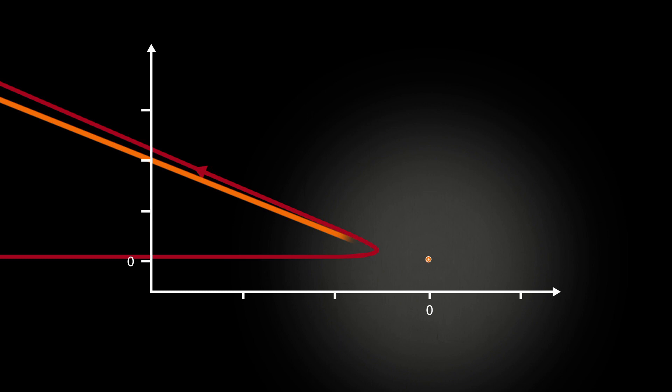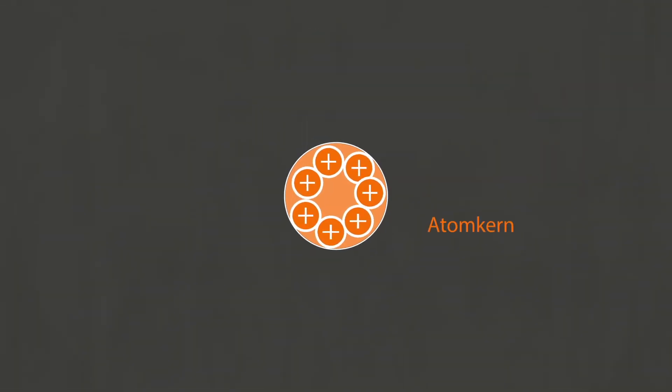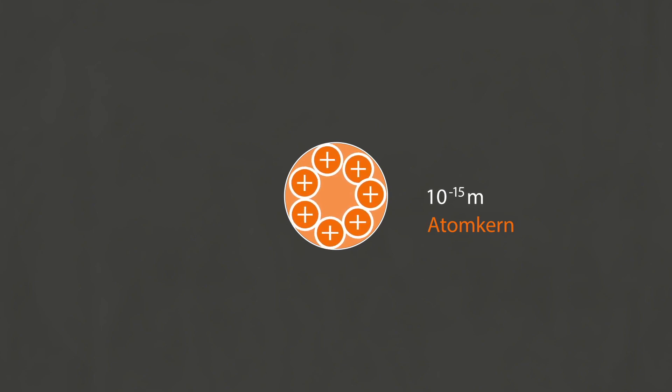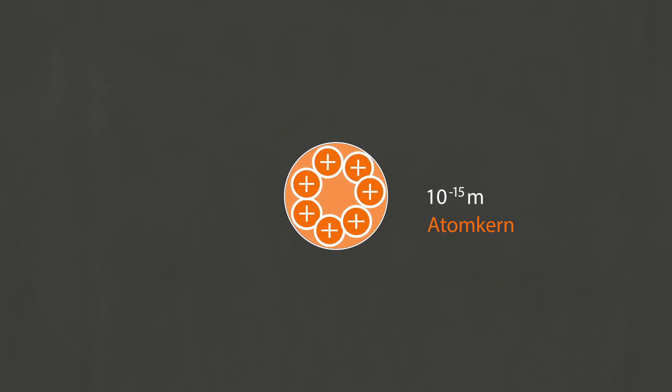Rutherford was able to specify a limit at which such deflections occur. He also inferred the size of the atomic nucleus from the respective scattering angle. That size is 10 to the power of minus 15 meters.